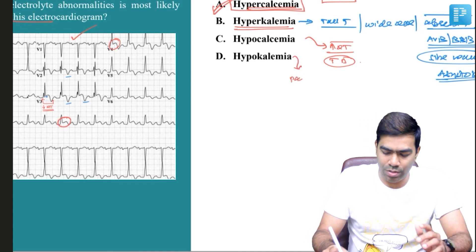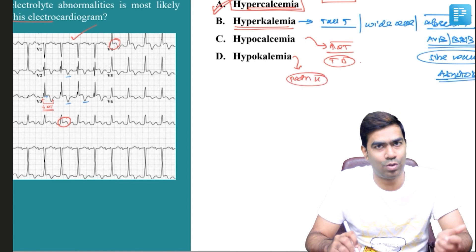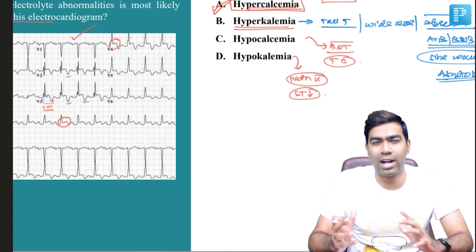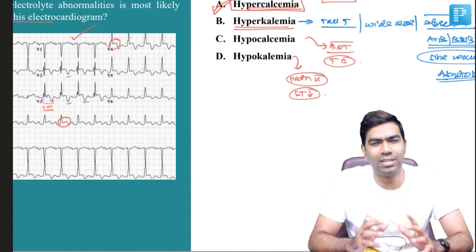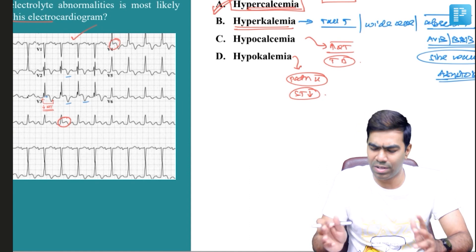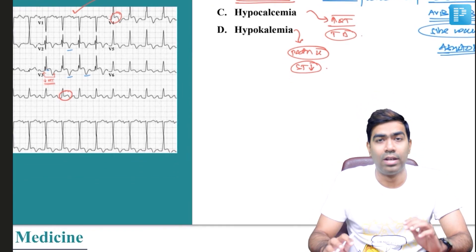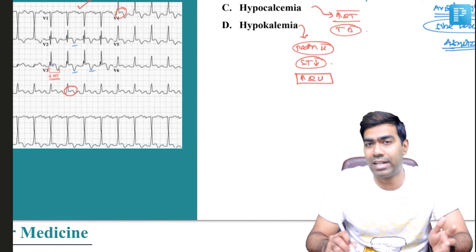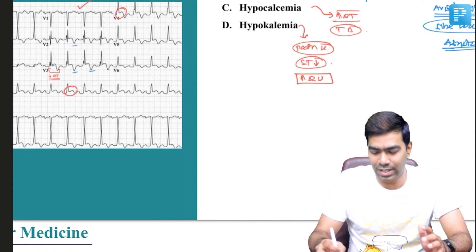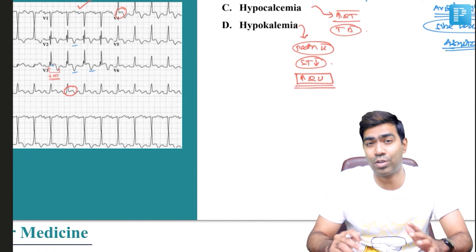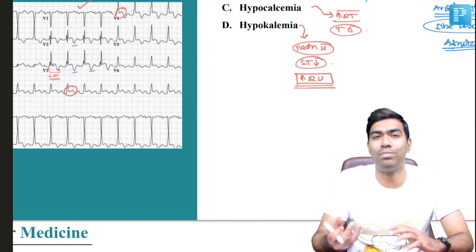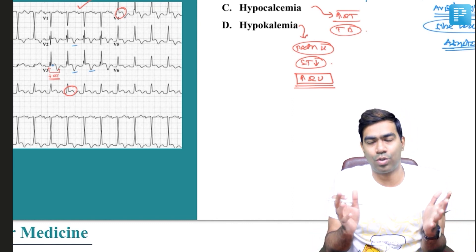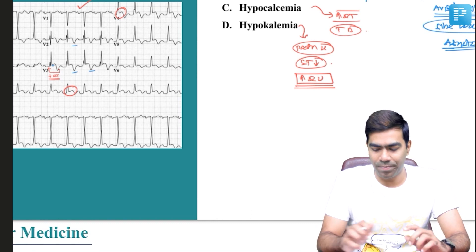In hypokalemia, you are going to see pathological U waves, which you all know. Apart from that, you might see ST depressions which can look like the hockey-stick ST depression seen in digitalis effect, though this ST depression will be a little different. You might also see a prolonged QU interval — even though certain textbooks say prolonged QT interval, it's actually the prolonged QU interval. That is because the U waves, which are large in hypokalemia, tend to merge with the T waves, making it difficult to distinguish between them. So you measure the QU interval, not the QT interval, in patients with hypokalemia.